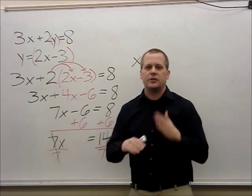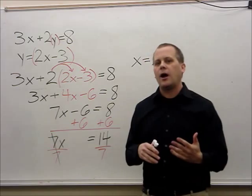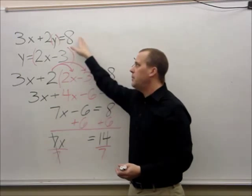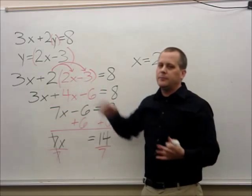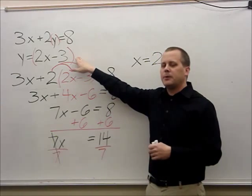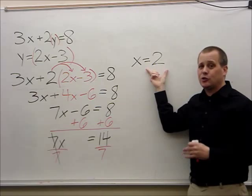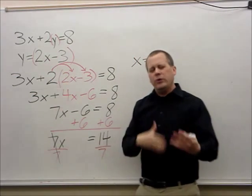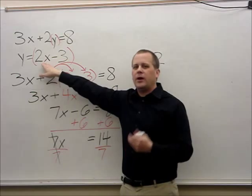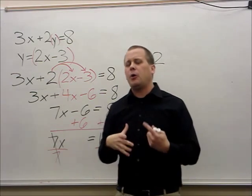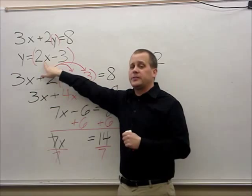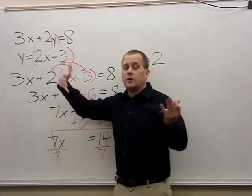Keep in mind we're trying to find the point of intersection — where those two lines will cross. I take my answer x equals 2 and substitute it back into one of the equations. Which looks easier: the top equation 3x plus 2y equals 8, or the bottom equation y equals 2x minus 3? I'll select the second equation because the numbers are smaller, so I replace x with 2.